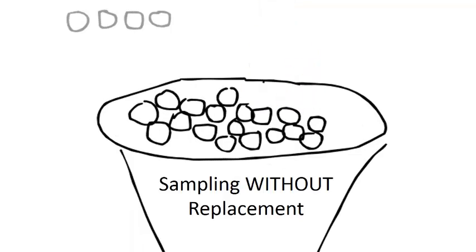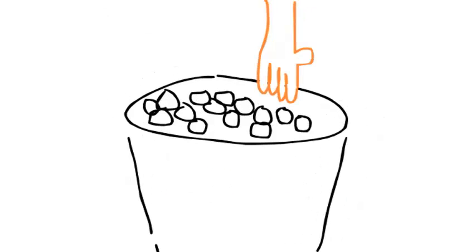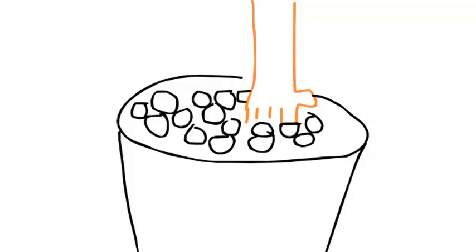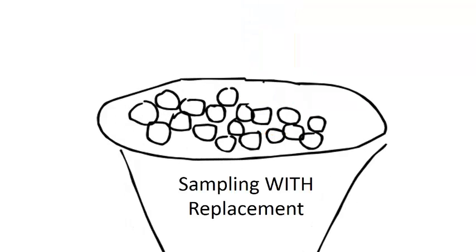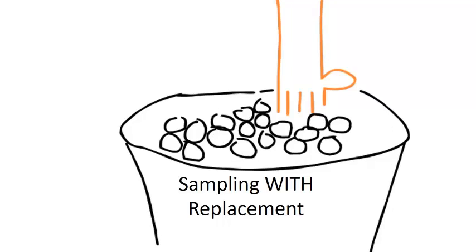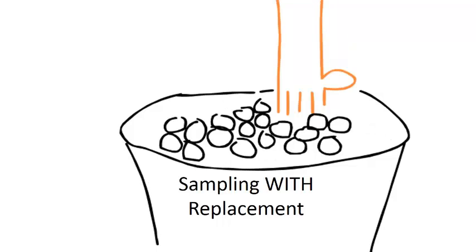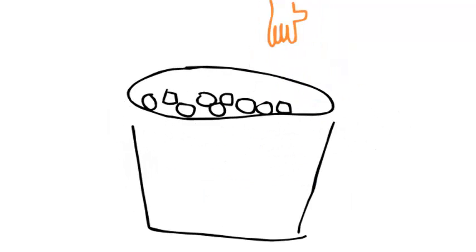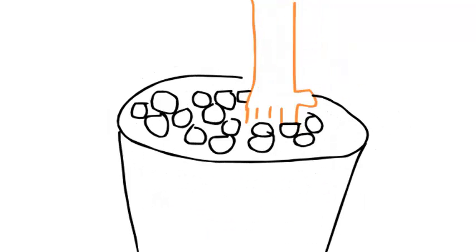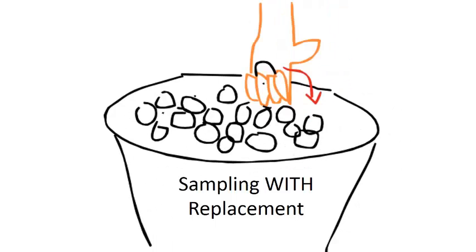When you put a sampled ball back into the bucket, its probability of being sampled again is now unequal to balls that have not been sampled. You can imagine how complicated it is to track these probabilities with each draw. If for some reason you are sampling with replacement, which is rare in population sampling, you should not use a finite population correction because the total population, big N, stays constant with each draw.